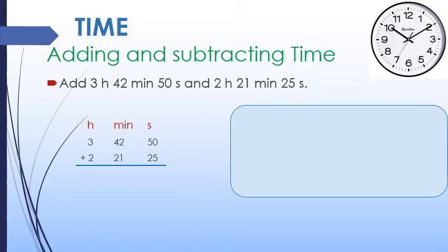In the second column, we have written 50 seconds and 25 seconds. We are adding two things: 3 hours 42 minutes 50 seconds written in the top row, and 2 hours 21 minutes 25 seconds in the bottom row. 42 minutes and 21 minutes go in the minute column, and 3 hours and 2 hours go in the hour column. Now let us see how we will add by doing the regrouping.